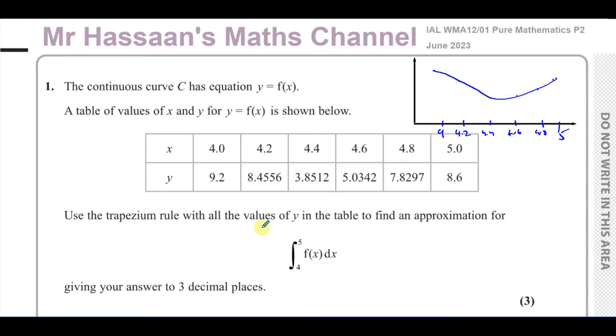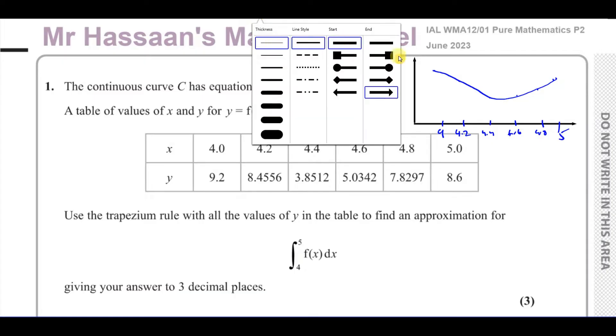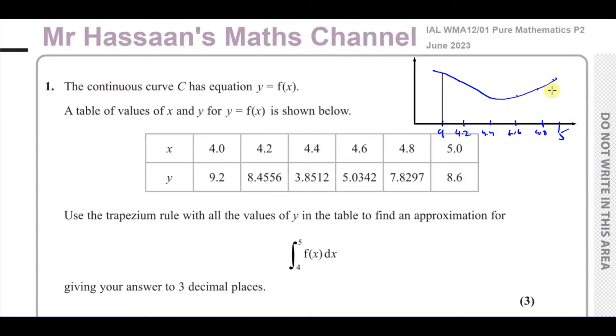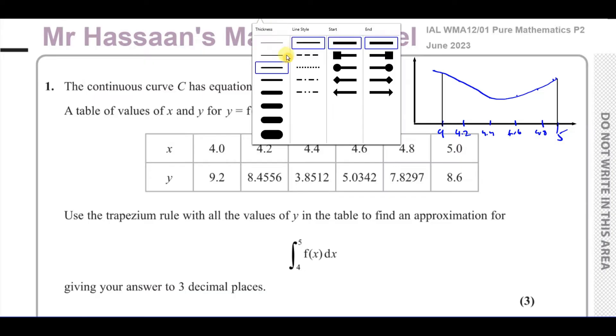So what they want to do is, they want us to find the integral or to estimate the integral of this function between 4 and 5, which is the same as finding the area under this curve or between this curve and the x-axis between x equals 4 and x equals 5. So we want to find this whole area here. That's what you do when you integrate between these limits. Now of course, we can't integrate because we don't have the equation of the curve, and plus they've told us as well to use the trapezium rule. So even if they did, they're asking us to use the trapezium rule.